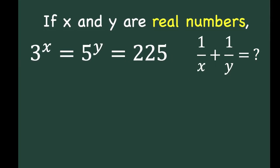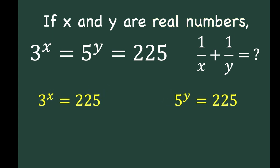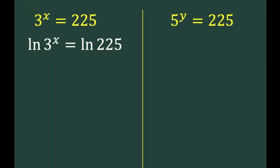Let's begin by writing this as two separate equations: 3 raised to x equals 225 and 5 raised to y equals 225. Then we can get the natural logarithm of both sides. We have ln of 3 raised to x equals ln of 225 on the left, and ln of 5 raised to y equals ln of 225 on the right.